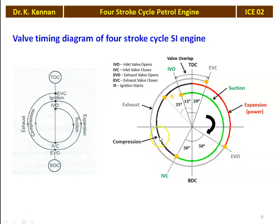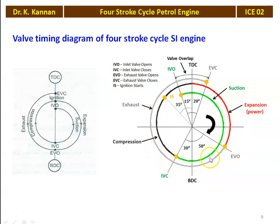After the inlet valve closes, compression takes place. The spark is not produced exactly at the top dead center — it is produced some 35 degrees before TDC. Once the piston reaches the top dead center, the expansion — shown by the red color — begins and the power stroke takes place. The exhaust valve is not opened exactly at the bottom dead center either — it opens a maximum of 50 degrees before the bottom dead center, then the burnt gases are led to the atmosphere. The exhaust valve is closed only after the top dead center. The duration of opening of the exhaust valve and the intake valve are both more than in the theoretical valve timing diagram.